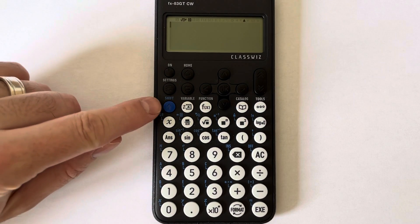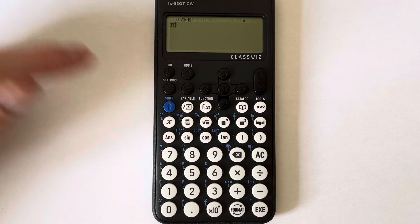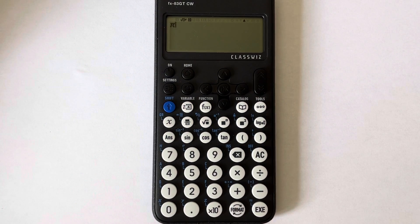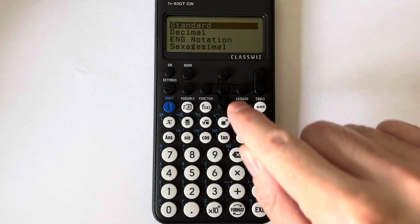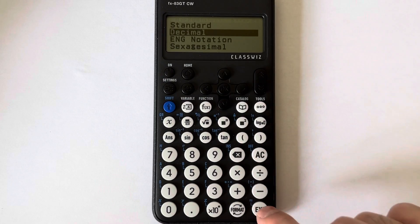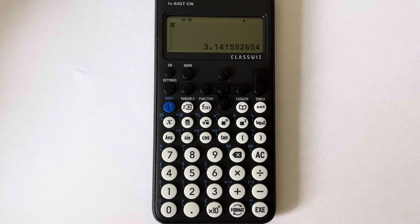It's actually on the second function of the 7 key. So to get pi up, you press shift and seven, and there's pi. If you want to know what it is as a decimal, press equals and then format and scroll it down to decimal, and there you go.